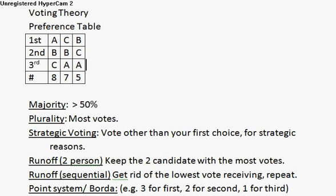There are a couple of different ways we can do a runoff. One version keeps the two candidates with the most votes — in this case, A and C. The other is a sequential runoff: you eliminate the lowest vote-receiving candidate and repeat the election. Since there are only three candidates here, both approaches amount to the same thing. B would be eliminated, and those five B-voters would vote for their second choice, C.